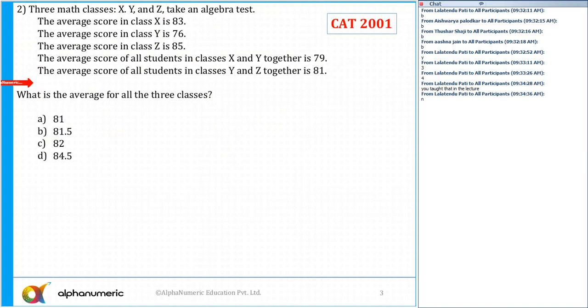Now question number two, what is the answer? The correct answer is option B, which is 81.5. It says there are three classes X, Y, and Z. Here there are two different methods.